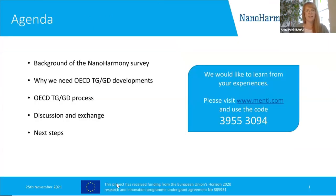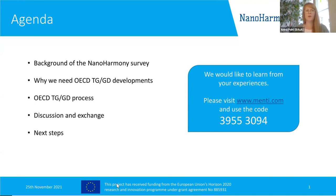Here is a short agenda for what we're aiming through this one-hour session today. First, I would like to provide a background of the Nanoharmony survey so that everybody's informed, and then a brief part on why we actually need OECD test guideline developments, and a short introduction to the OECD test guideline development process. Then we would also love to hear your experiences with this process, with different phases, where you see obstacles and barriers. For this, we'd like to use the Mentimeter tool — here's the code, posted in the chat — and we have some next steps that will be presented at the end.